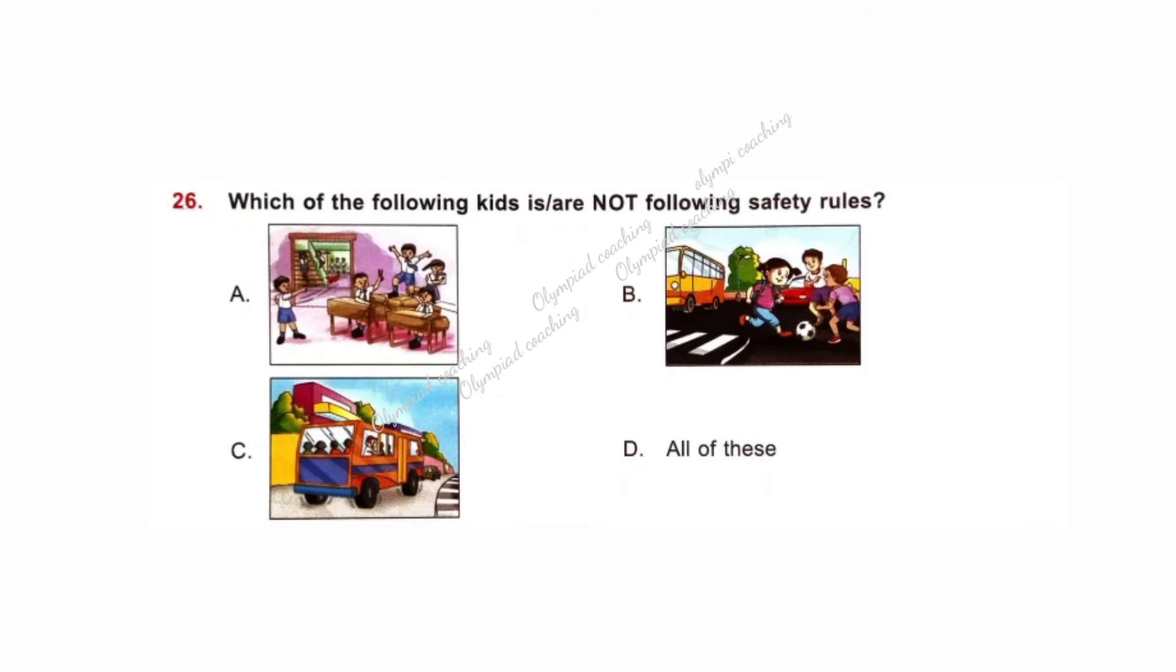Question number 26. Which of the following kids is or are not following safety rules? Option A: Kids are jumping on the desk in a classroom. Option B: Kids are playing with a ball in the middle of a road. Option C: A kid is taking out his hand in a moving bus. So, all these activities are unsafe. They are not following safety rules. Option D is correct: All of these.